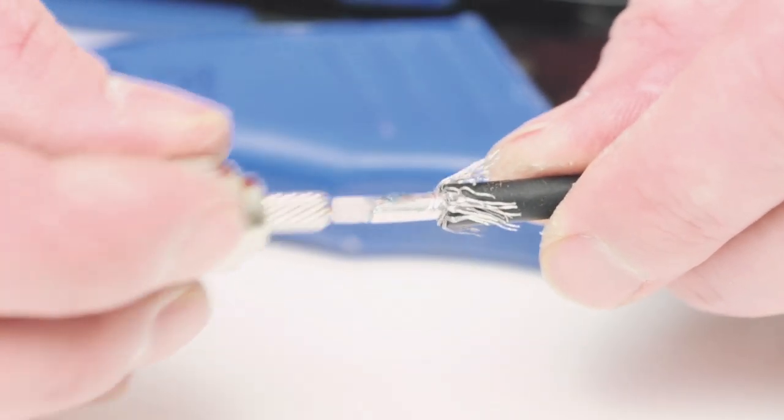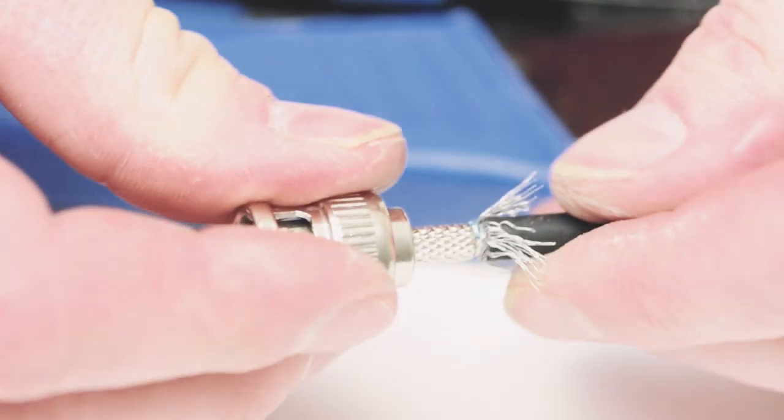Then take the connector housing and slide it onto the dielectric. Fold the braid back on top of the connector and slide the ferrule up.